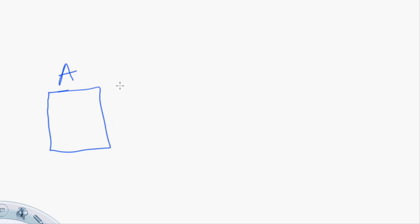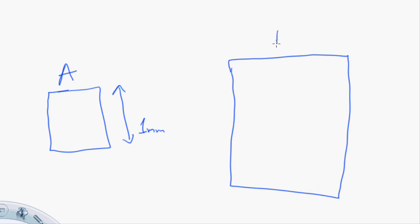Let's start with a simple example. Suppose there are two cells. This is the smaller cell A — we're calling it small because its length is one millimeter. And suppose there is a larger cell B — we're calling it larger because its length is two millimeters. So cell A has a length of one millimeter and cell B has a length of two millimeters.